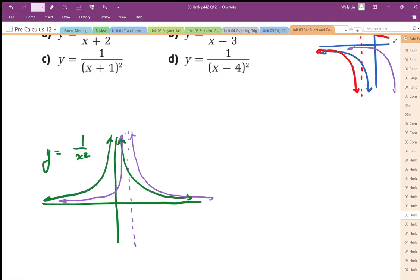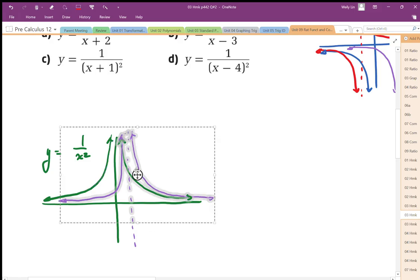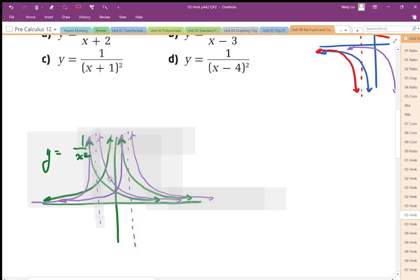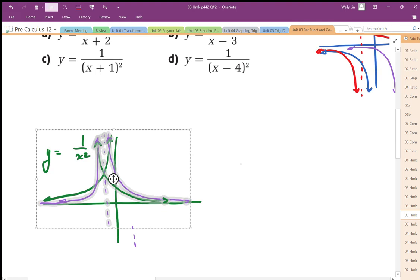For d, we have a horizontal shift of plus 4. Wait, I think I'm making a mistake here. For part c, the horizontal shift was actually minus 1, so I'll just shift it over here.